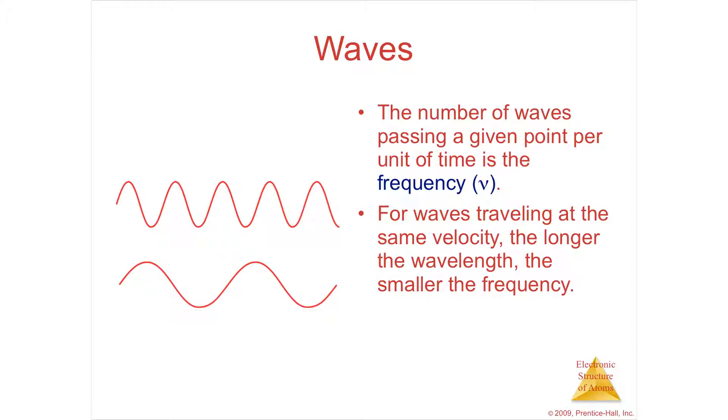So the longer the wavelength, the fewer cycles would pass in a second. The shorter the wavelength, the more cycles would pass. So it's an inverse relationship. So you're going to have lambda nu (λν) on the same side of the equal sign because any time that you have two units on the same side of the equal sign, they are inverted to each other.